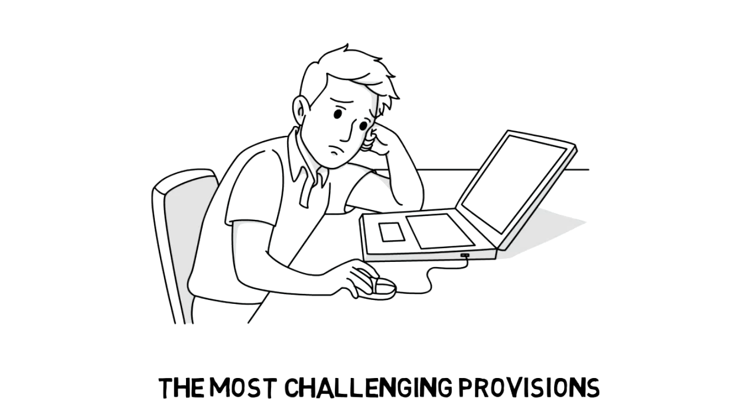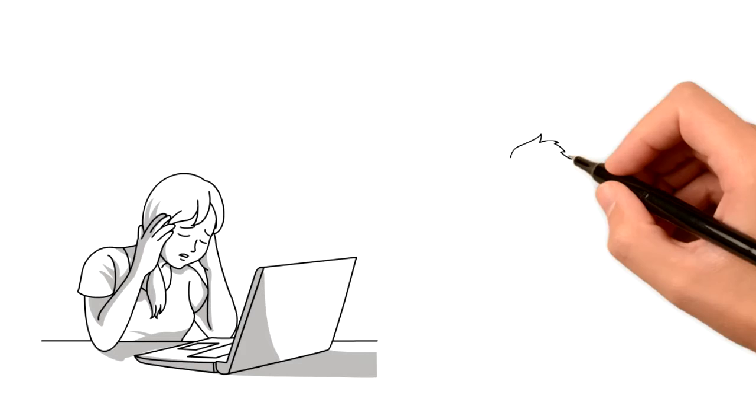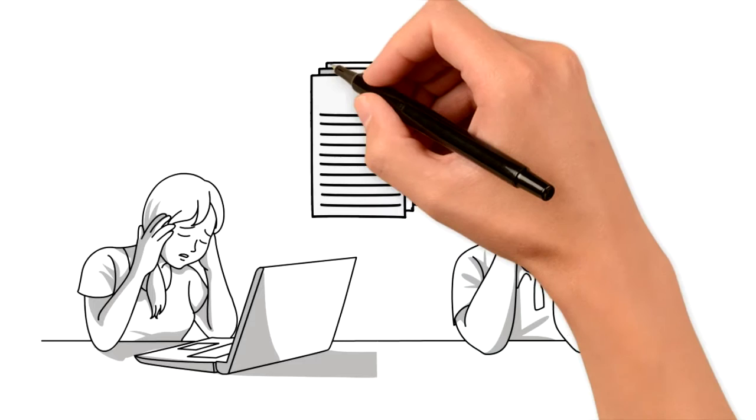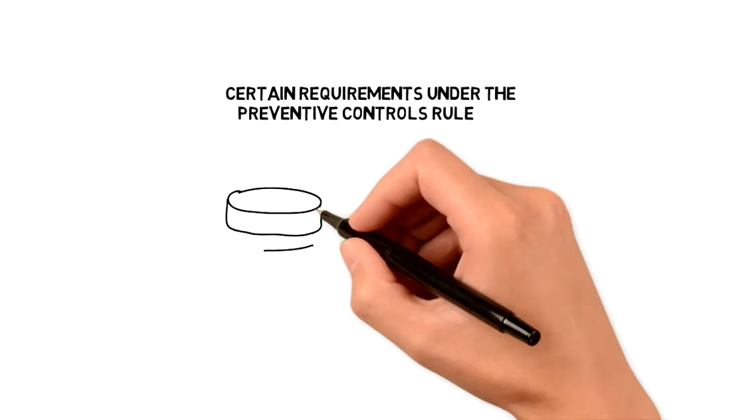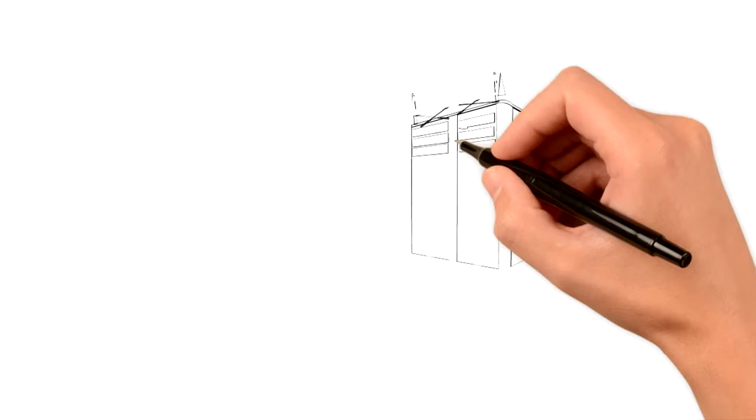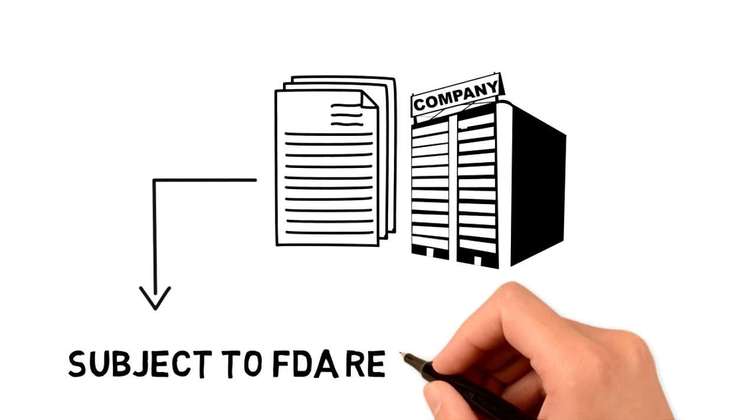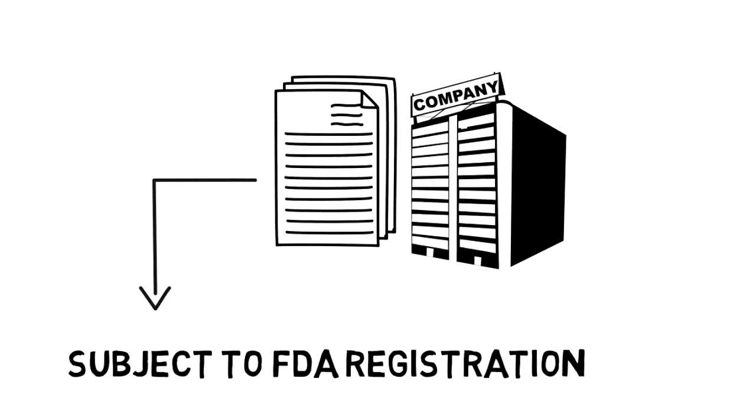Sure. So I would say that there's really a range of issues confronting FDA-regulated food companies. Some smaller companies are actually struggling to figure out whether certain FSMA rules even apply to them, which is harder than it sounds because the regulations are lengthy and complex. For example, certain requirements under the preventive controls rule don't apply to dietary supplement manufacturers, but they do apply to manufacturers of dietary ingredients. So companies really need to be aware of the nuances. Another example that comes to mind is that some companies have mixed-type facilities where some of the activities are subject to FDA registration and therefore the preventive controls requirements, and some are not.